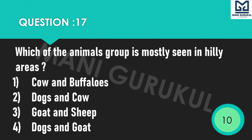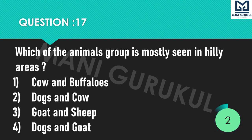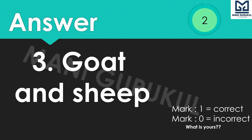Question 17: Which animal group is mostly seen in hilly areas? Options: 1st Cows and Buffaloes, 2nd Dogs and Cow, 3rd Goat and Sheep, 4th Dogs and Goat. Time's up. Answer is 3rd: Goat and Sheep.